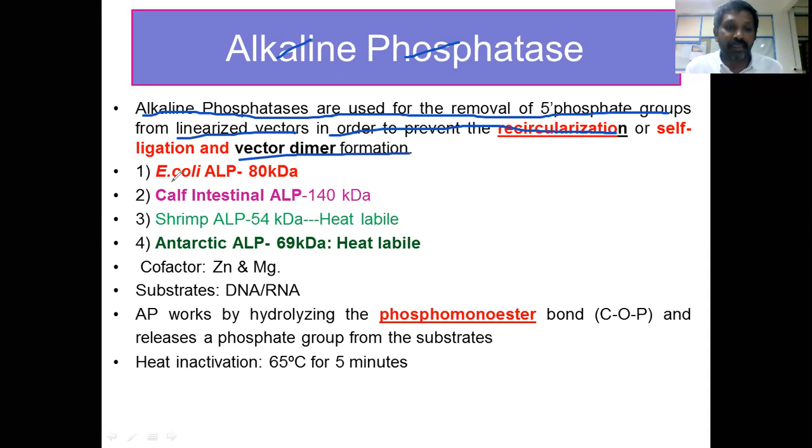In the market, there are four alkaline phosphatases available. The first one is E. coli alkaline phosphatase, second is calf intestinal alkaline phosphatase, third is shrimp alkaline phosphatase, and the fourth is Antarctic alkaline phosphatase.